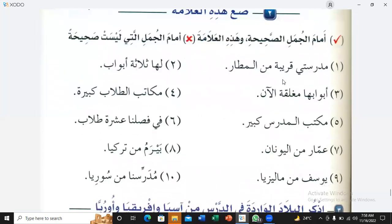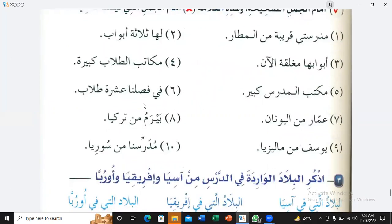The first is madrasati qaribatun min al-matar, wrong. Okay, laha thalasatu abwaab, right. Abwaabuhaa muhulaqatun al-an, wrong. Makatibu tulaabi kabira, wrong. Makatibu al-mudarrisi kabira, right. Fi faslina asharatu tulaab, right. Ammarun min al-yunan, wrong. He's from sin, okay.